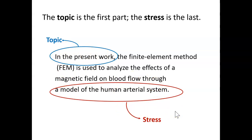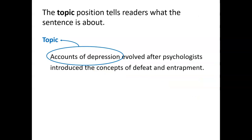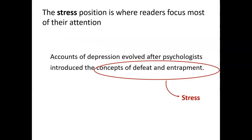It's just the last main noun clause — the end is the stress, the beginning is the topic. So in this sentence, the topic is 'accounts of depression' and the stress is 'concepts of defeat and entrapment.' The topic position orients readers to what the sentence is about — it's the main focus. And the stress is where readers focus most of their attention.